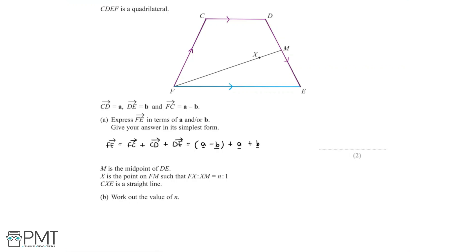Now let's simplify by collecting like terms. We have a plus a, which equals 2a, and minus b plus b, which equals 0, leaving us with a simplified vector of 2a. So we have found that the vector FE is equal to 2a in its simplest form.